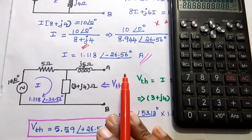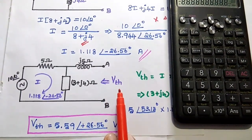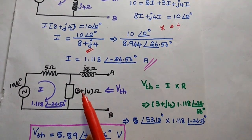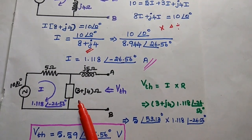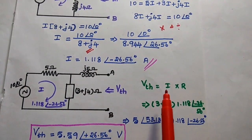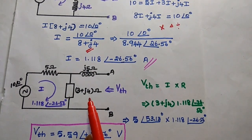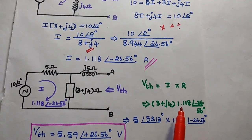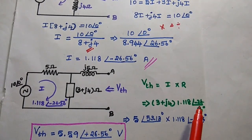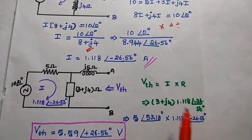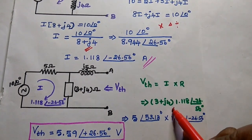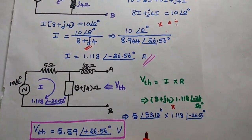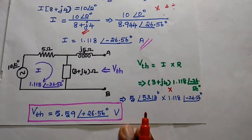After getting this current we find the Thevenin voltage. The Thevenin voltage is the voltage drop across this impedance, which equals I multiplied by the impedance value: (3 plus J4) multiplied by 1.118∠−26.56°. We need to perform multiplication, so we convert the rectangular form 3 plus J4 into polar form.